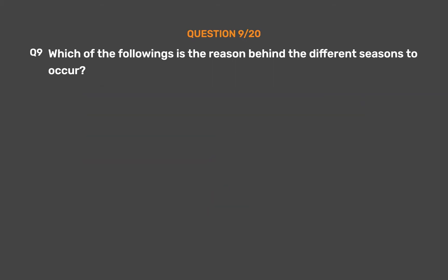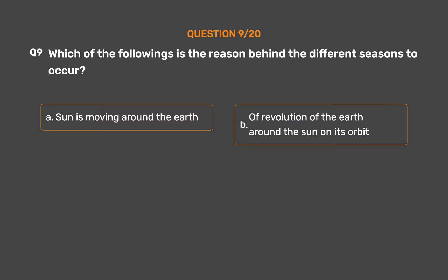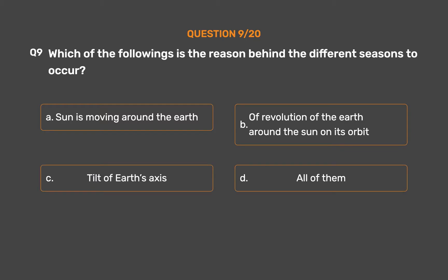Question number 9. Which of the following is the reason behind the different seasons to occur? Option A: Sun is moving around the Earth. Option B: Revolution of the Earth around the Sun on its orbit. Option C: Tilt of Earth's axis. Option D: All of them. The correct answer is Option B, revolution of the Earth around the Sun on its orbit.